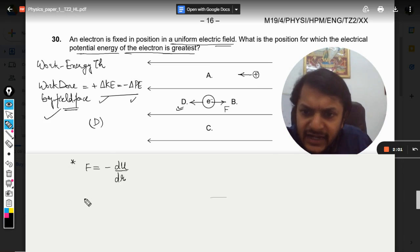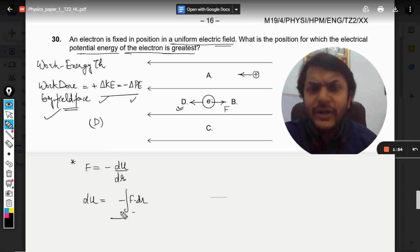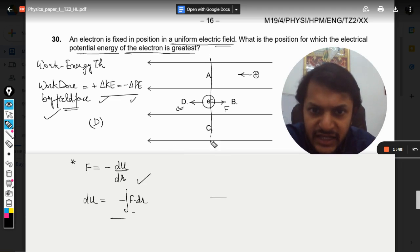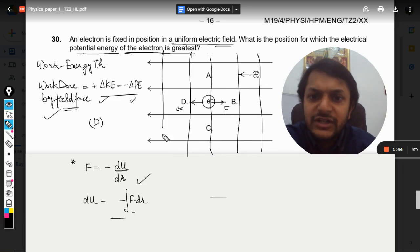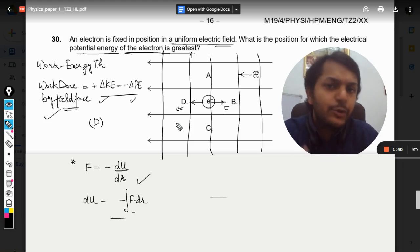From this we can see that if we want to increase our potential energy, it would be this. We need not to go into mathematics, but because of this formulation what we understand is that there are equipotential lines here like this. These are equipotential lines.